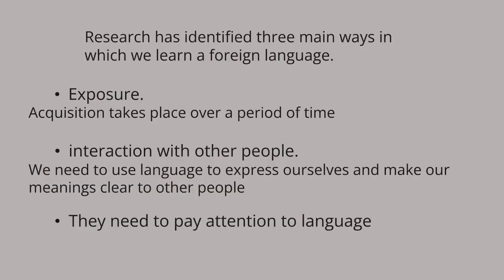Research has identified three main ways in which we learn a foreign language. Firstly, experts talk of us acquiring language — this means the same as picking it up. To really learn a foreign language, we need exposure to lots of examples of it, and we learn from the language in our surroundings. We need to hear and read lots of language which is rich in variety, interesting to us, and just difficult enough — i.e. just beyond our level, but not too difficult. Acquisition takes place over a period of time, not instantly, and we listen to and read items of language for a long time before we begin to use them — a silent period.